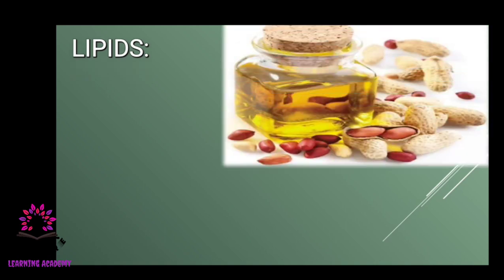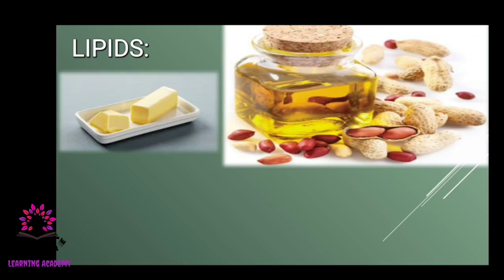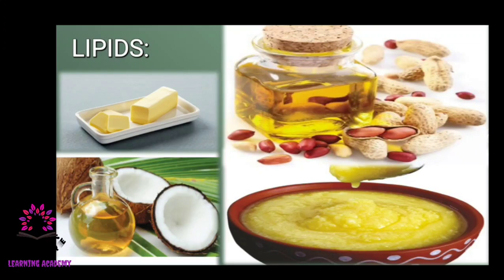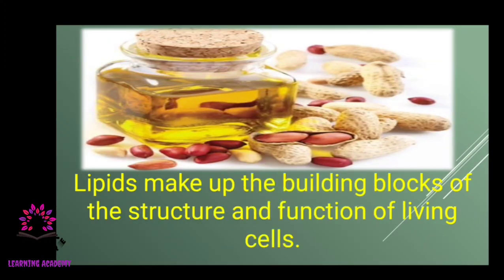The next nutrient is lipids, also known as fats. Examples include groundnut oil, coconut oil, sesame oil, and ghee — all high in fat. Even a little fat gives more energy than carbohydrates. Lipids also make up the building blocks of the structure and functioning of living cells.